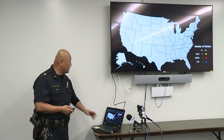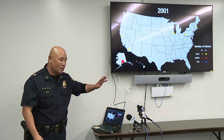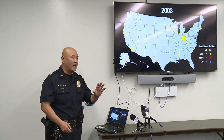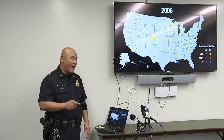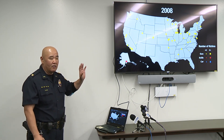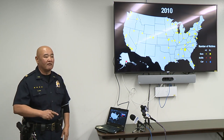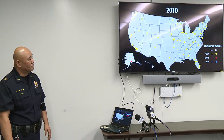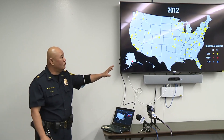Here are statistics from 2000 to 2018 covering all active attack incidents across the United States. The ALERT program, which we push to both officers and civilians, is backed by FBI statistics and was adopted by the FBI in 2012 as the national standard. The numbers have increased over those 18 years, with a drastic increase between 2010 and 2014. Yellow dots represent gun attacks, red are knife attacks, and blue are vehicle attacks.